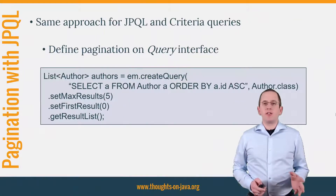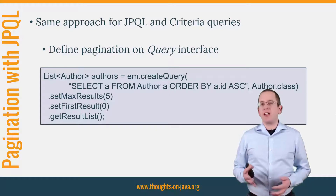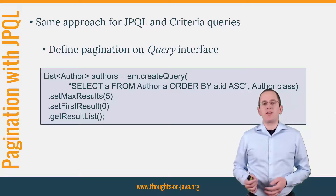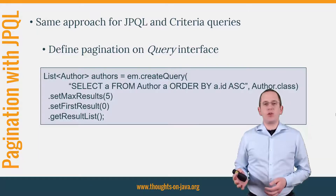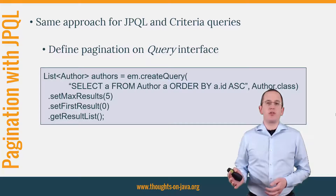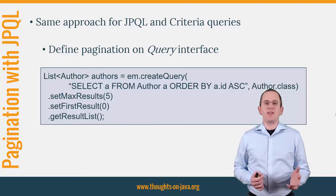With JPA and Hibernate, you have to set the pagination information on the query interface and not on the query string as you know it from SQL. You can do that by calling the setFirstResult and setMaxResults methods. The code snippet here on the slide shows a simple example that returns the first 5 authors from the database. The resultSetIndex is 0-based and you therefore need to provide 0 as a start position to begin with the first element. Let's jump into the IDE and give it a try.